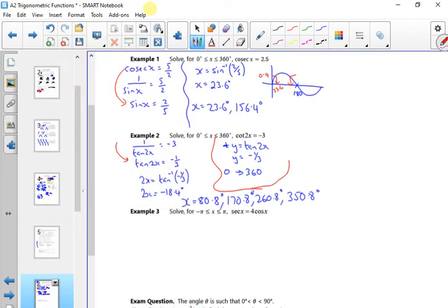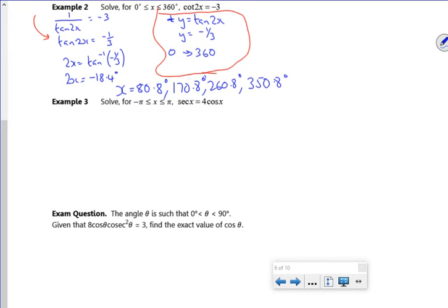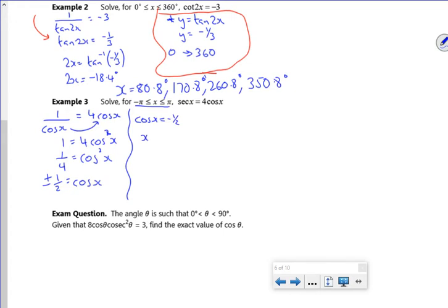Next, I've got a rearrange with radians. Secant is 1 over cos x, then I've got 4 cos x, take that up there. I've got 1 is 4 cos squared x, take the 4 down, I've got 1/4 is cos squared x. So I've got plus or minus 1/2 is cos x. So cos x is minus 1/2 and cos x is plus 1/2.